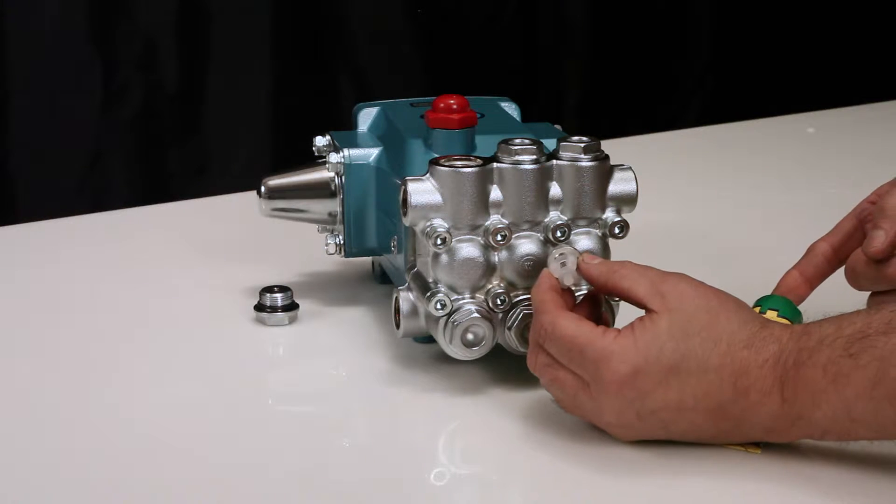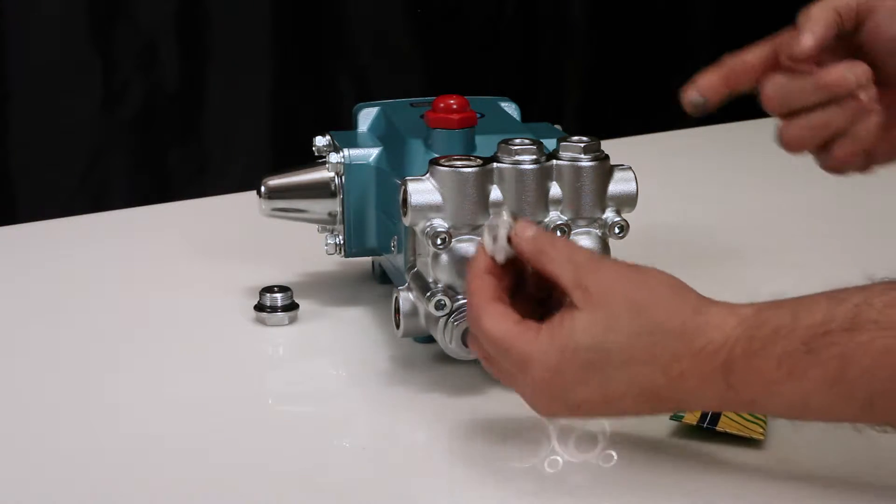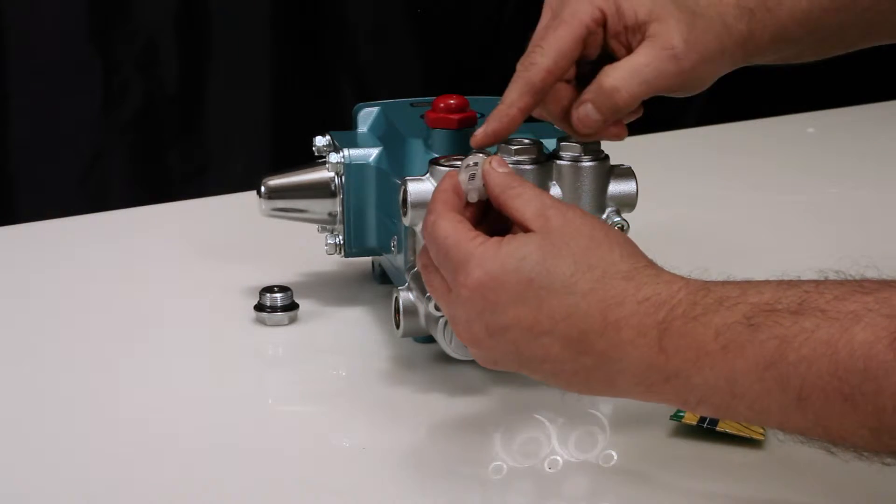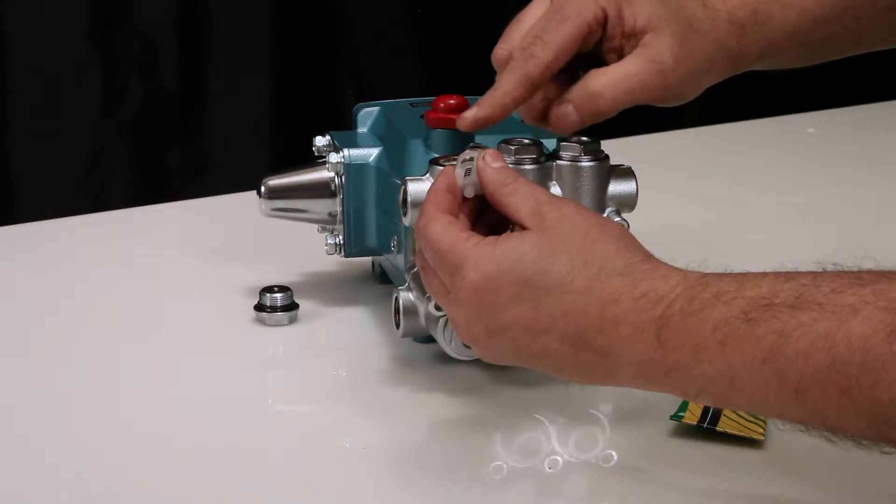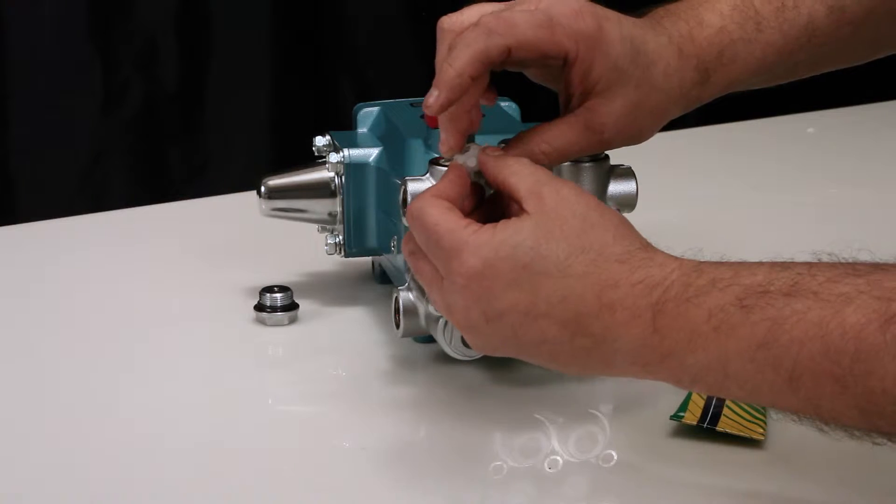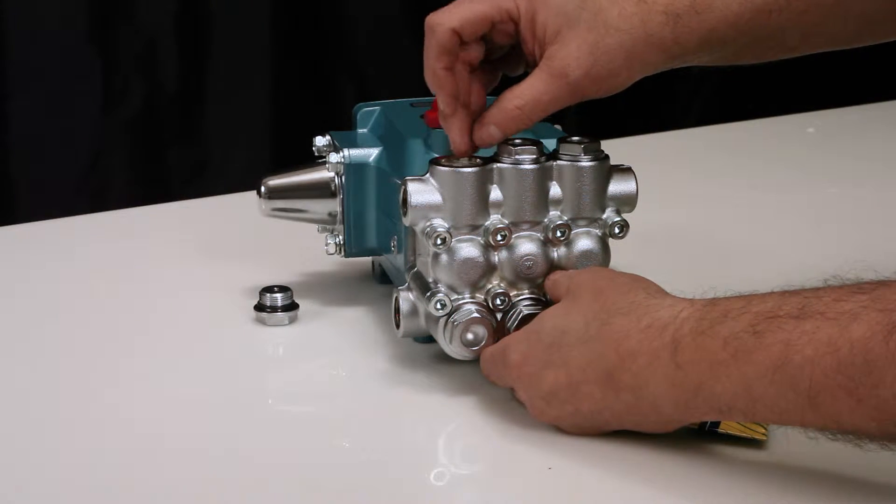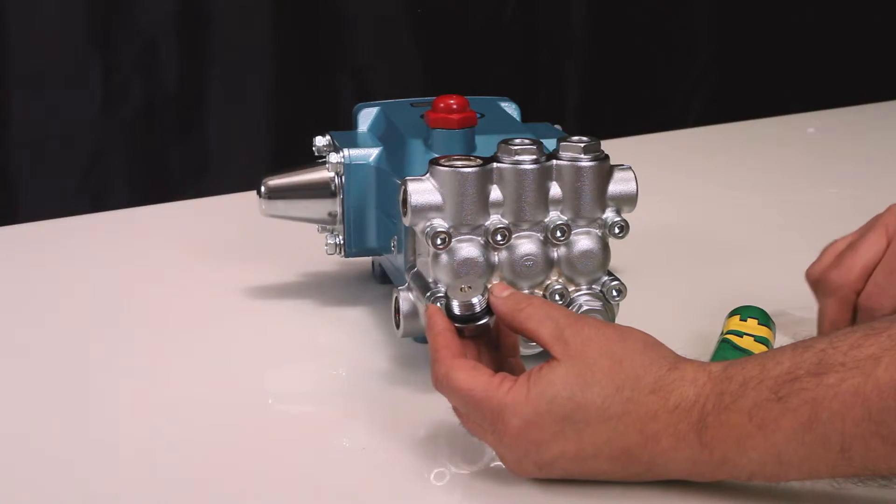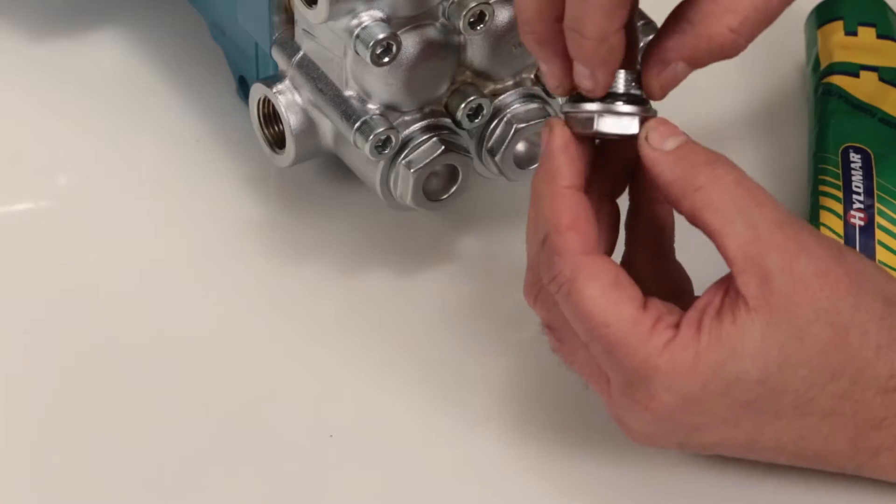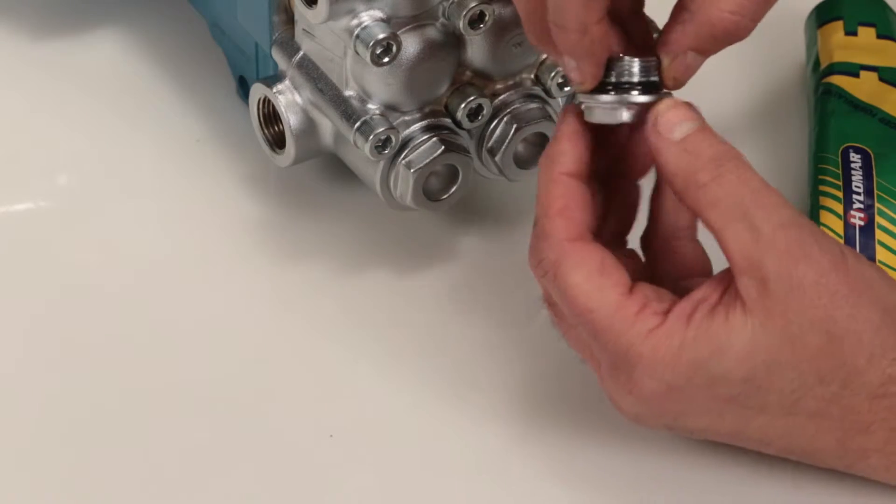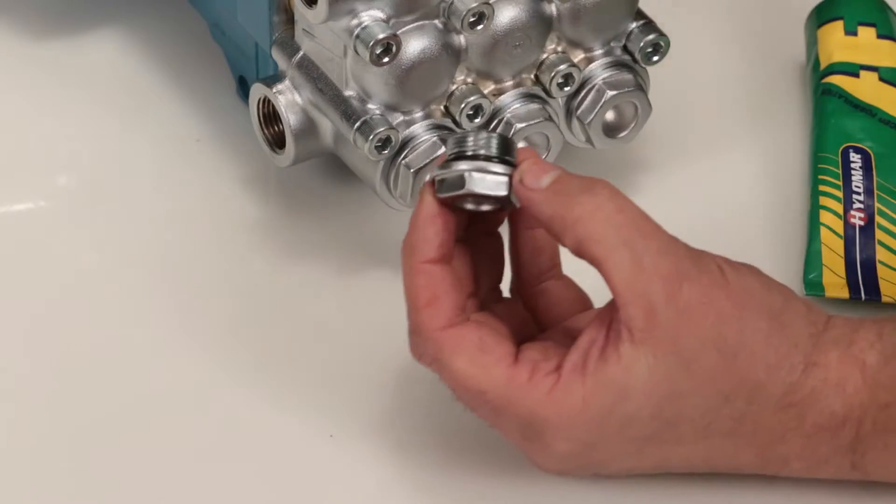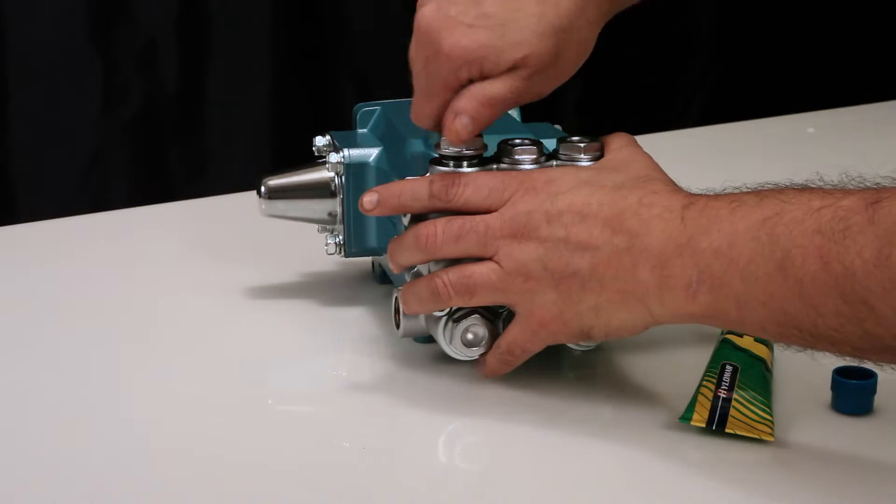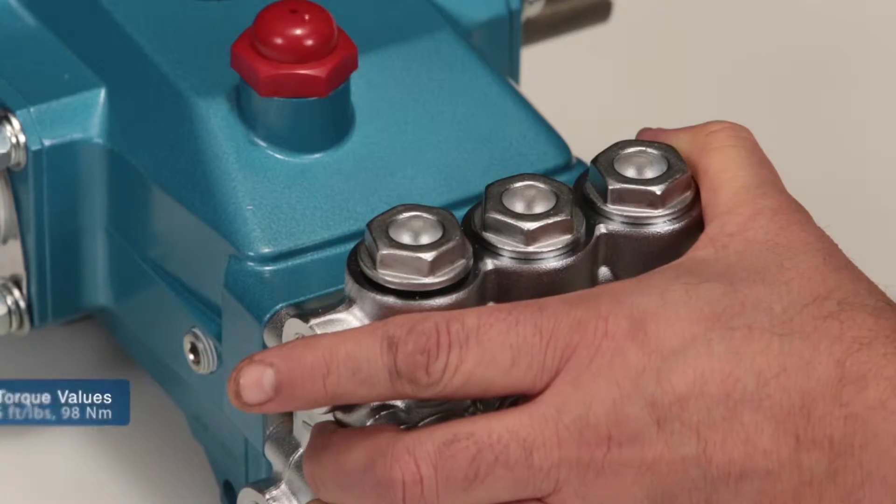Before installing the new valve assembly, lubricate the O-ring and backup ring on valve seat with liquid gasket. Next, insert valve assembly into manifold and press into place. Lubricate the O-ring and reinstall the valve plug. Torque to specification.